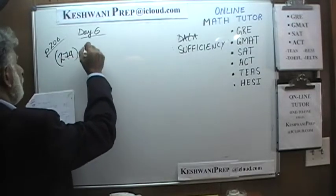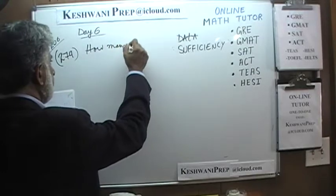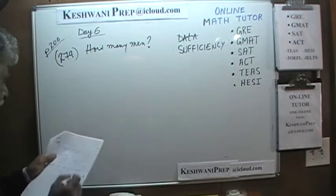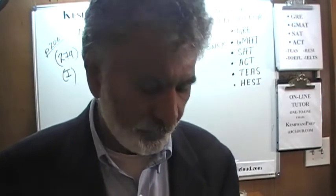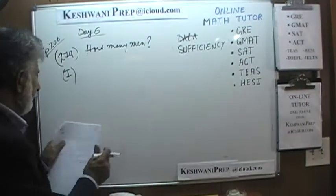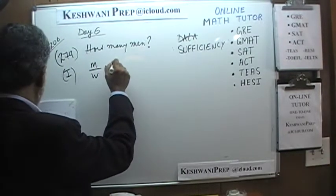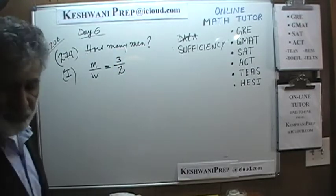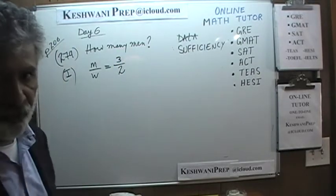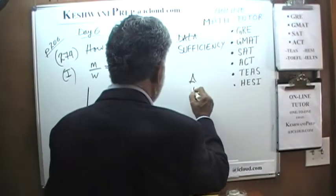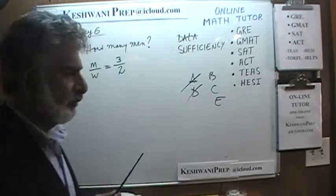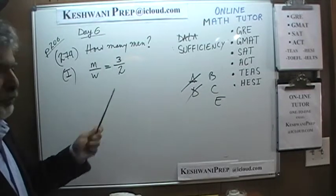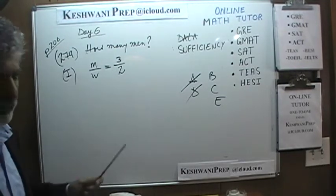Problem 279. The question is how many men do we have? Statement 1 tells us the ratio of male to female is 3 to 2. Obviously that's not enough — simply knowing the ratio does not enable us to figure out how many males there are. It could be 3 men and 2 women, or 30 men and 20 women, or 3 million men and 2 million women. That's not enough.